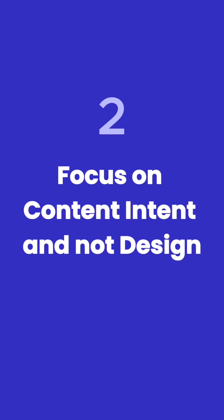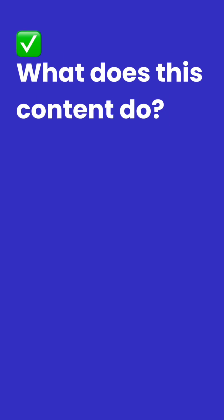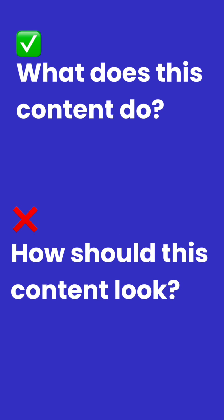Number 2: Focus on content structure and not the design. When designing your content model, your question should be 'what does this content do?' rather than 'how should this content look?' This way you have the intent for your content.